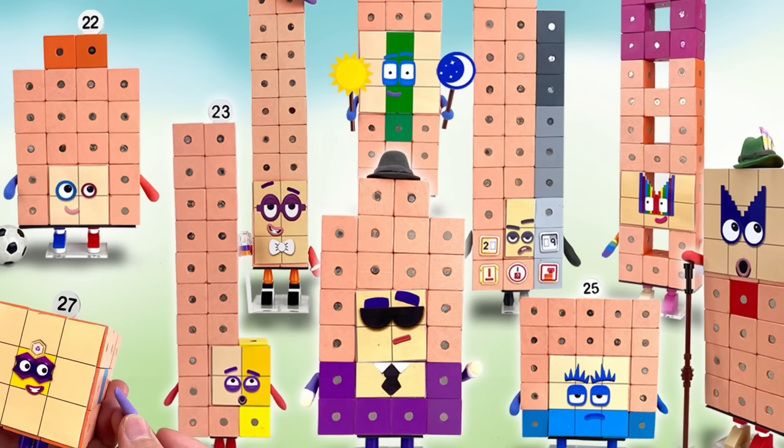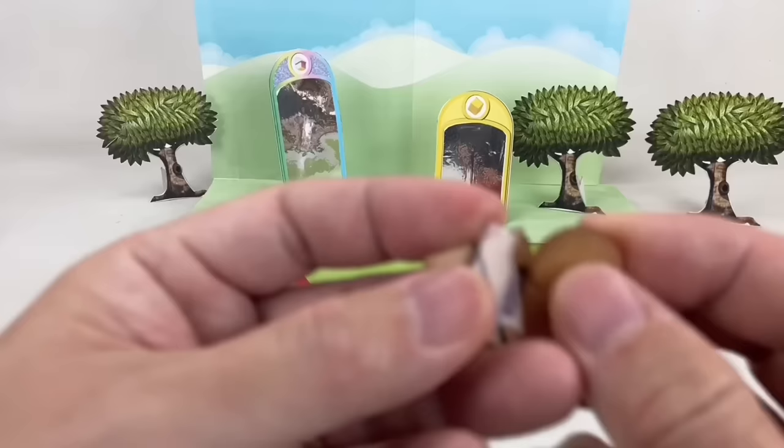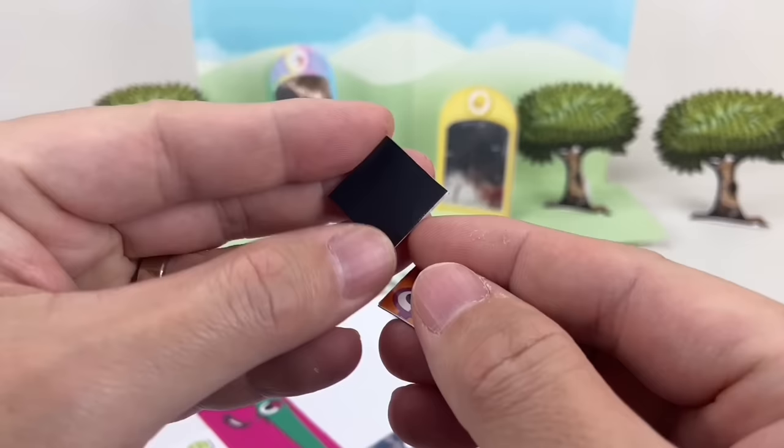Hello Number Blocks fans! Today we'll show you how to build these custom Number Blocks 20 to 29 using wooden magnetic blocks, magnetic pieces, acrylic pieces, B7000 adhesive, lego bricks, photo sticker paper, magnetic sheets, and air dry clay.